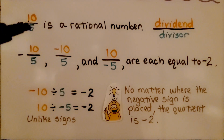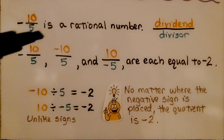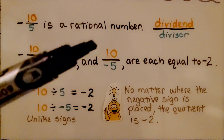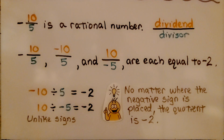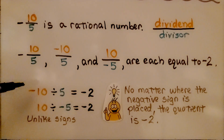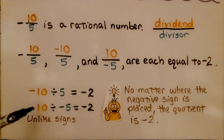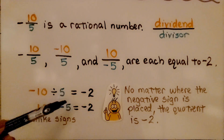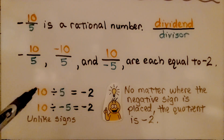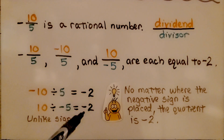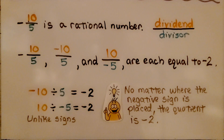We have ten divided by five, and we can say we have a negative ten divided by a positive five, and a ten divided by a negative five. These are all equal to negative two. A negative ten divided by a positive five equals negative two, and a positive ten divided by a negative five equals negative two. They have unlike signs, so the quotient is going to be negative.